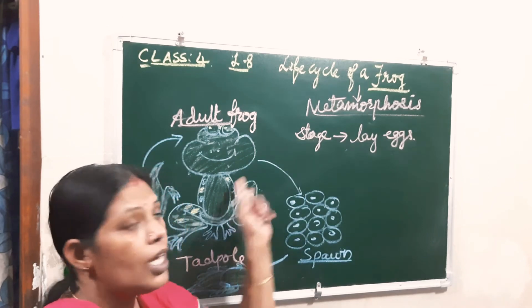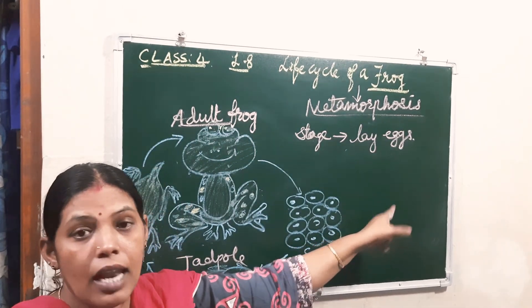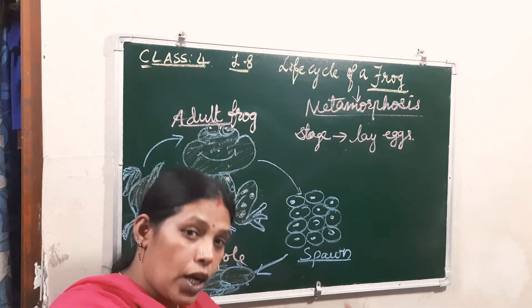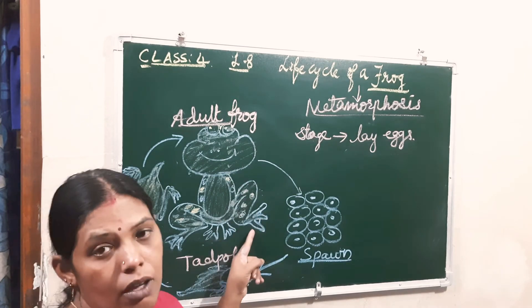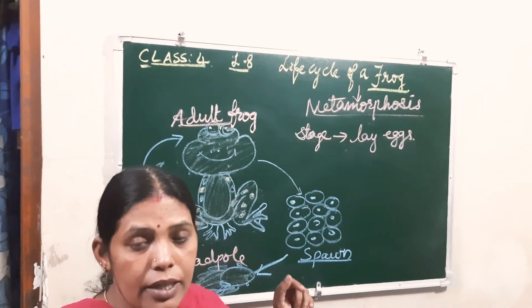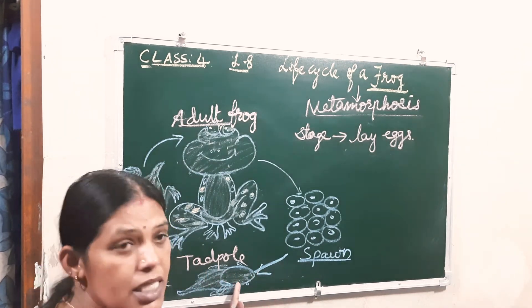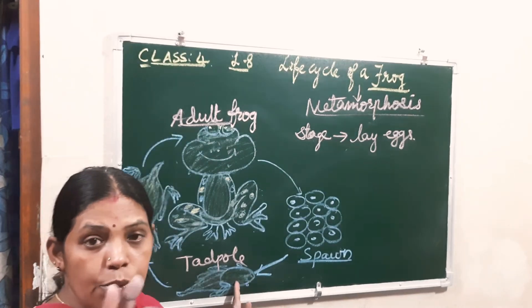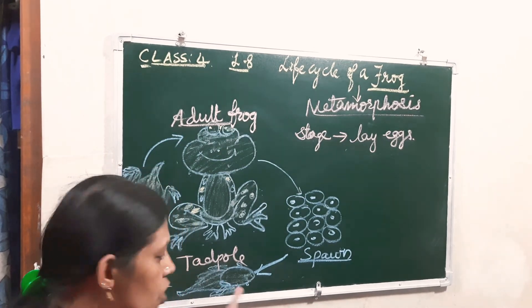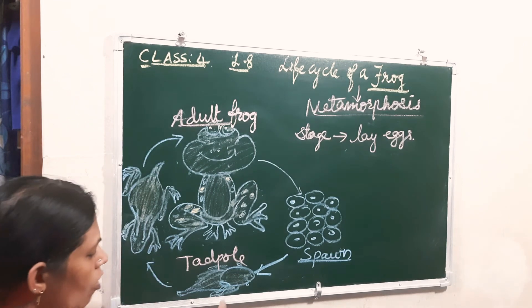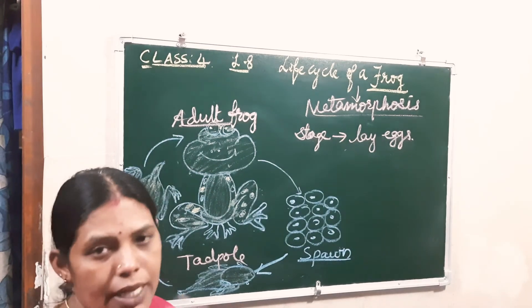When an adult frog lives on land, it uses its lungs for breathing. When it goes in water, it uses its moist skin for breathing. But when they are in the young one — the tadpole stage — they do not have lungs and do not use skin for breathing. They look like a fish; they have a tail and gills, and through those only they breathe.